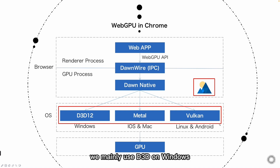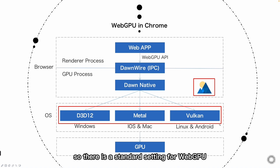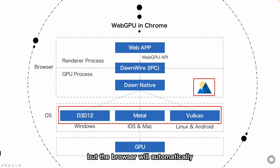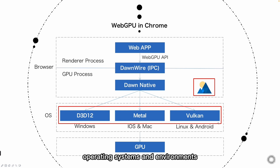We mainly use Direct3D on Windows, and iOS/Mac may use Metal. For other operating systems like Linux and Android, we generally use Vulkan by default. So there is a standard setting for WebGPU to apply these three APIs. It's not that WebGPU uses three at the same time, but the browser will automatically choose to use different API drivers to operate the GPU according to various operating systems and environments.